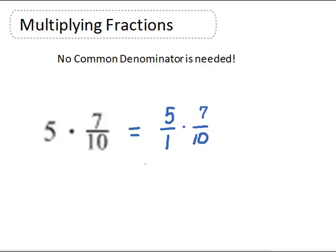5 and 10 have a greatest common factor of 5. 5 is 5 times 1, 10 is 5 times 2. The 5s reduce and we have 1/2. That 7 is prime, so we multiply across.